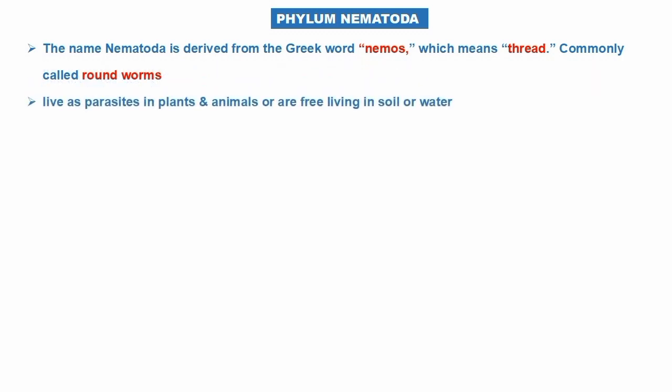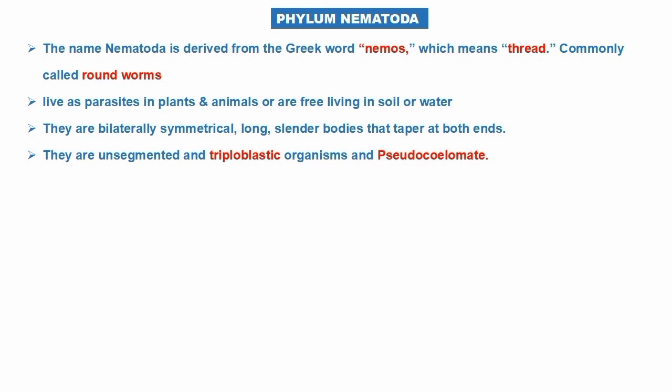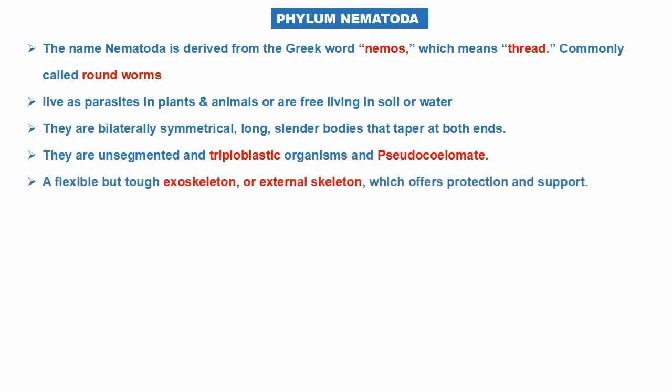The name Nematoda is derived from the Greek word 'nemos', which means thread, commonly known as eelworm or roundworm. They live as a parasite in plants and animals, or as free-living organisms in soil or water. They are bilaterally symmetrical, with a long, slender body that tapers at both ends. They are unsegmented and have a triploblastic body cavity and are pseudocoelomates.